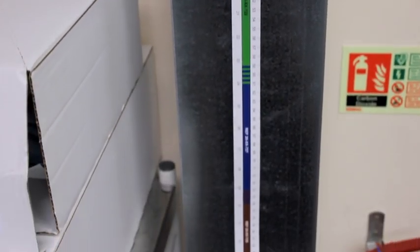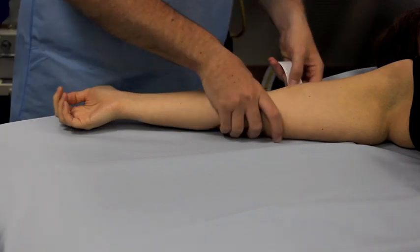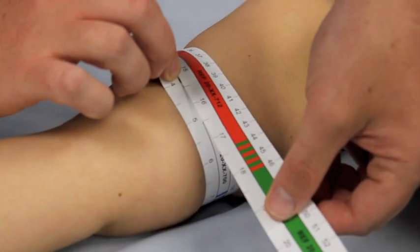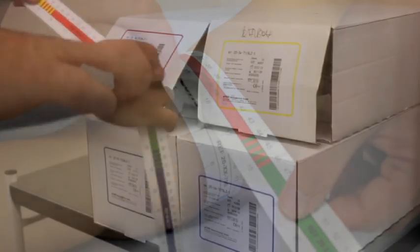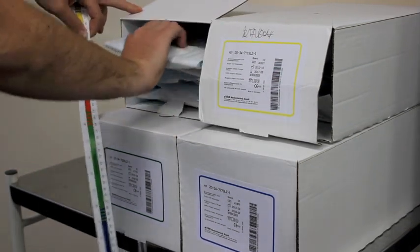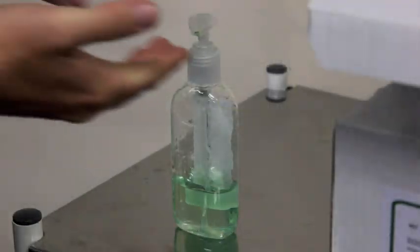The VBM colour coding system and tape measure facilitate ease of selection. The limb should be measured at the widest point. VBM offer a variety of shapes and sizes, varying from paediatric to bariatric, including the conical thigh calf.